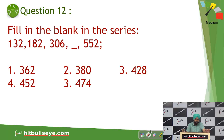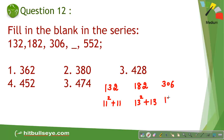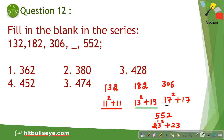Now here's a tough actual NMED question from last year: 132, 182, 306, 552. This series is hard to crack if you haven't practiced. The key: 132 is 11 squared plus 11; 182 is 13 squared plus 13, so 12 is skipped. Then 306 is 17 squared plus 17, and 552 is 23 squared plus 23.